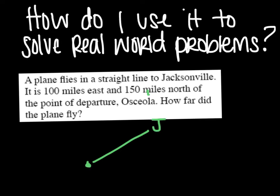It is 100 miles east and 150 miles north of the point of departure. So if it departed here, that means Jacksonville is 100 miles east. So this would be 100, and then 150 north. So how far did the plane fly?